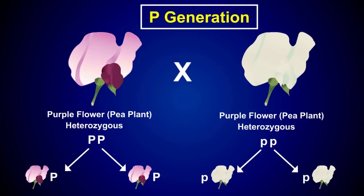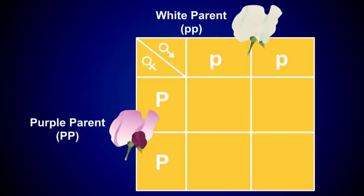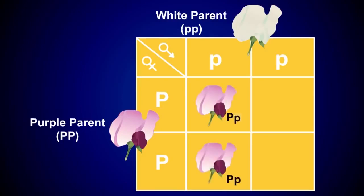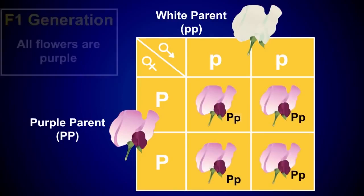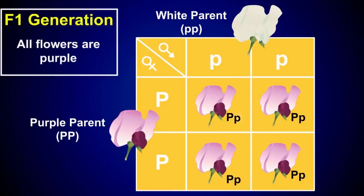A diagram of the cross between two members of the F1 generation, called a Punnett square, is shown here. All of the possible types of eggs are lined up on one axis, and the types of sperm are on the other axis. When the gametes from these pea plants are combined, all the offspring in the F1 generation are purple. This is because the trait for purple plants is dominant over the trait for white plants.